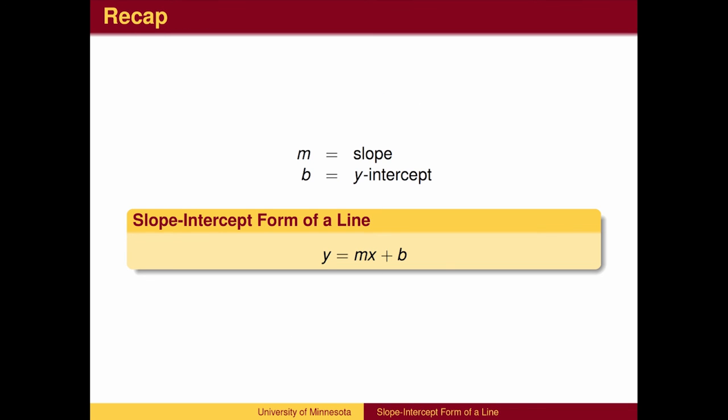To recap, given the rate of change or slope of a line, m, and an initial value, the y-intercept, b, we can write an equation of the line, the slope-intercept form, y equals mx plus b.